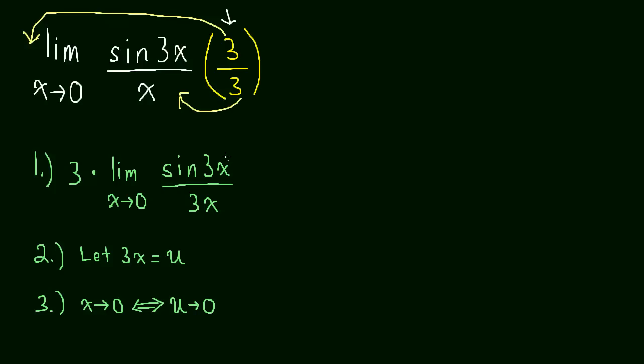So we just had to make that note so that we could go ahead with the next step, which is to make our substitution. So now we're going to say 3 times the limit. We said if x is going to 0, u has to go to 0, and if u is going to 0, x has to go to 0.